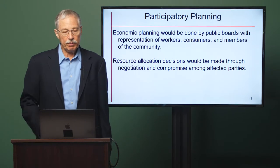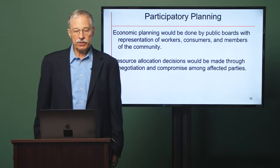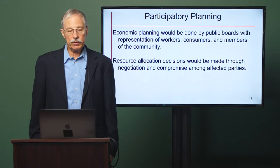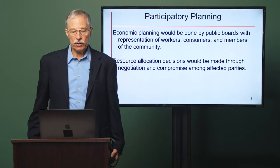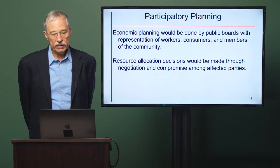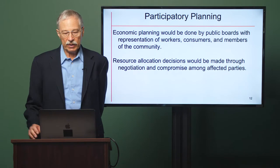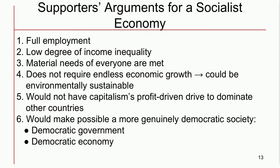Democratic socialism would be based on what is called participatory planning. Economic planning would be done not by a few top political figures, but by public boards that represented workers, consumers, and members of the community. Resource allocation decisions would be made through negotiation and compromise among the affected parties. This could be made relatively efficient by the advances in data processing and communications technologies. Supporters cite a number of advantages: full employment, a low degree of income inequality — not complete equality, but a relatively low degree — just enough to make sure people are willing to do the less desirable jobs.